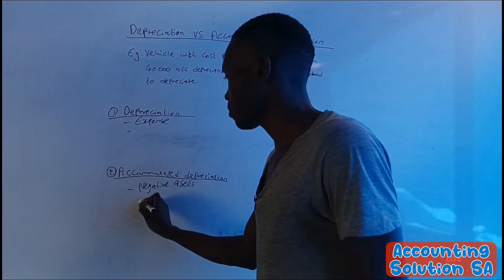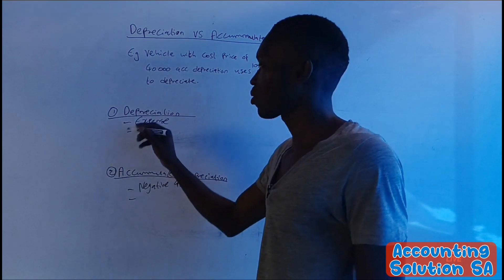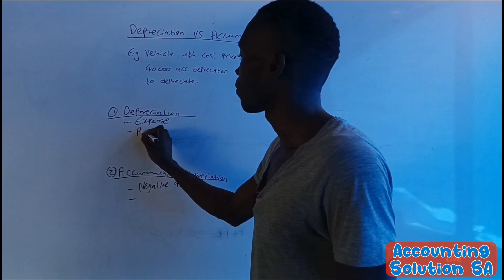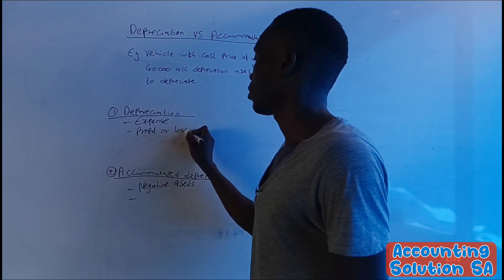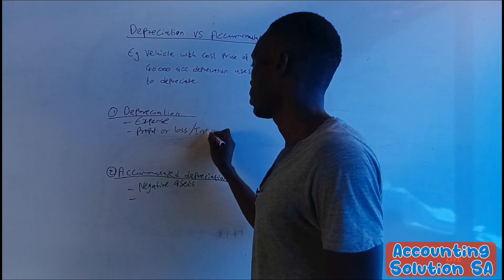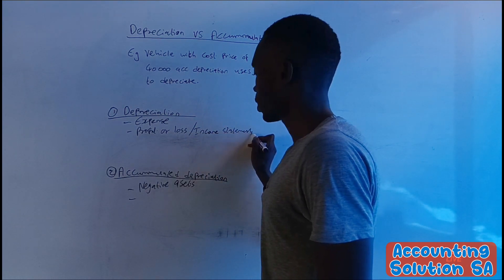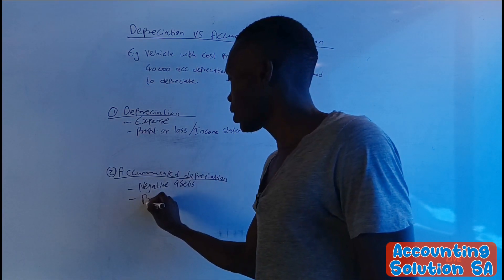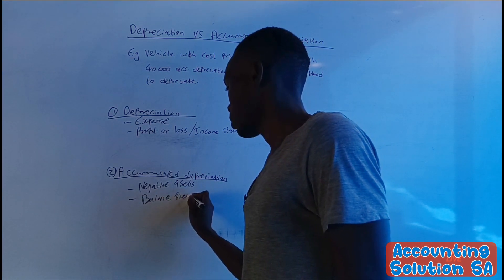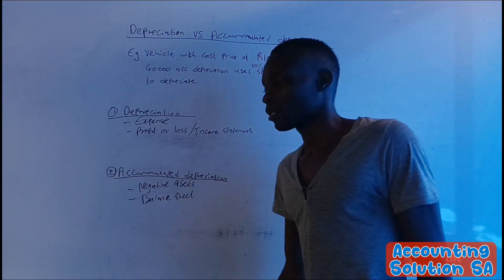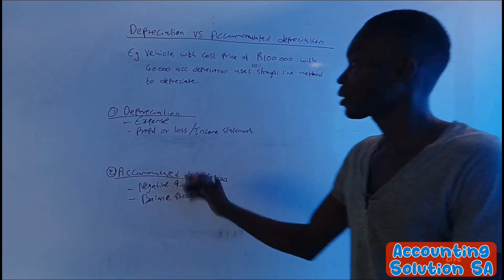Difference number two: depreciation is recorded under the profit or loss statement, also known as the income statement. Accumulated depreciation, on the other hand, is recorded under the balance sheet.